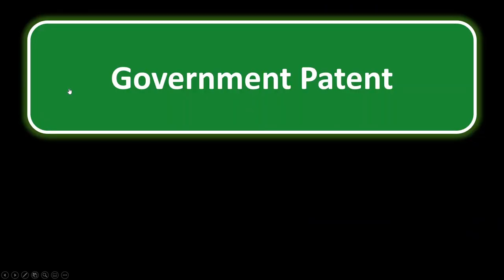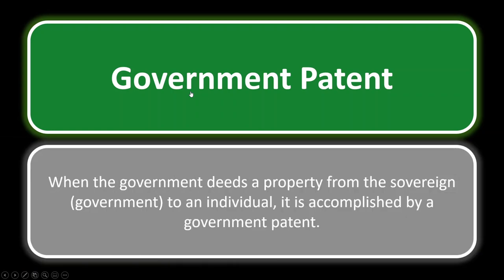Government patents. Remember, there are ways to transfer property, and one of them is when the sovereign gives property to a member of the public — they do so with a government patent. This is used to transfer title. When the government deeds a property from the sovereign — just another name for the government — to an individual, it is accomplished by a government patent.